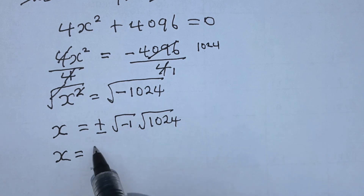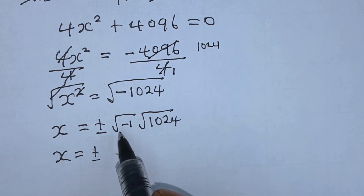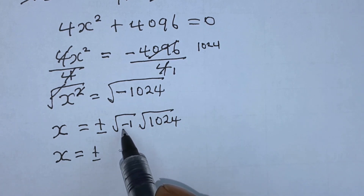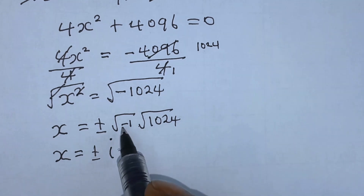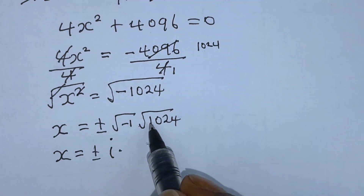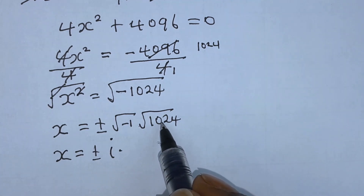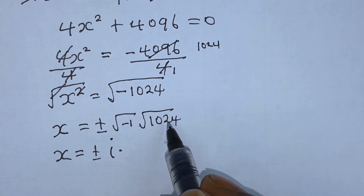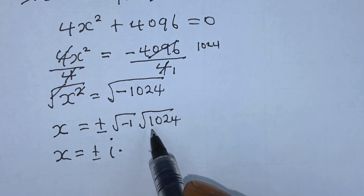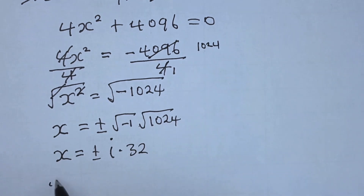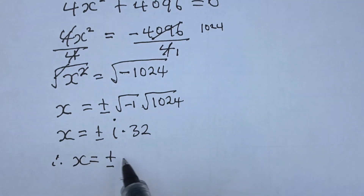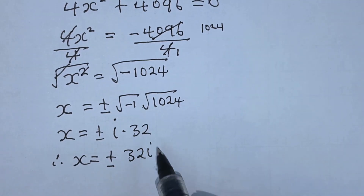From the properties of complex numbers, square root of minus 1 is the same thing as i. So here we have i multiplied by square root of 1024, which is 32. Therefore x is equal to plus or minus 32i.